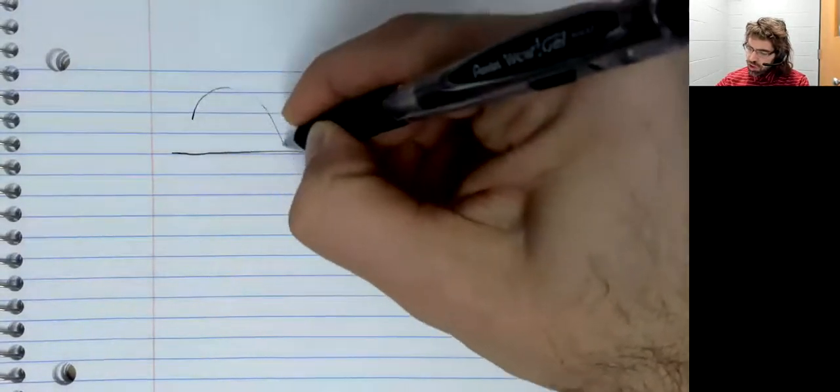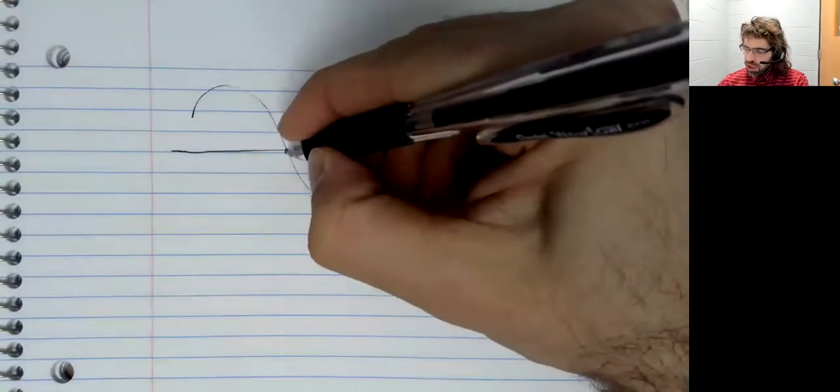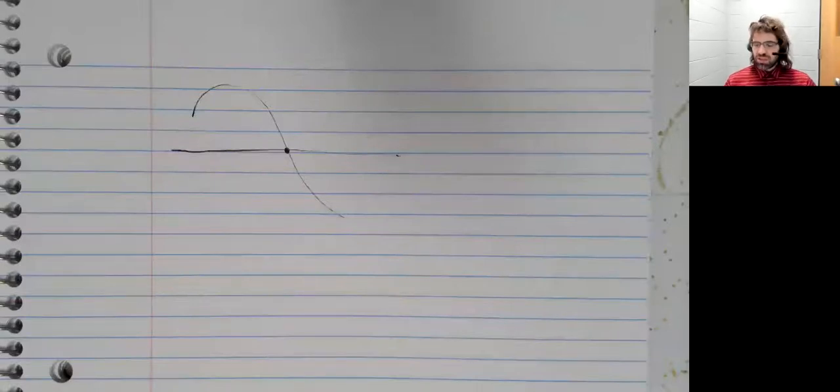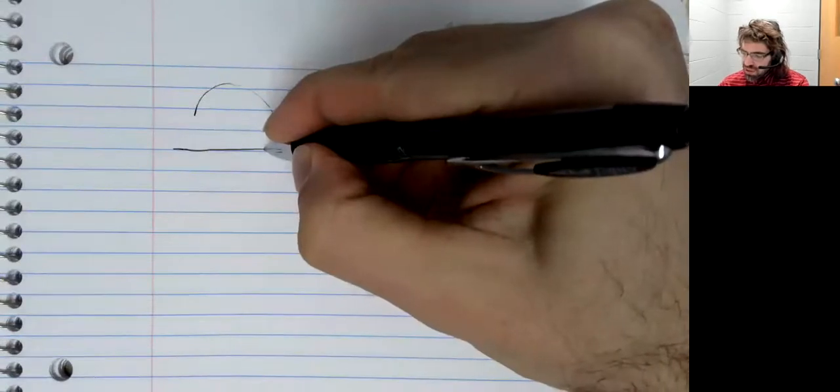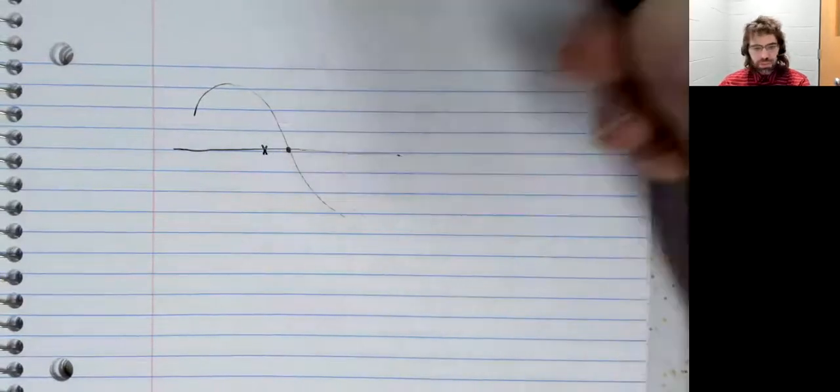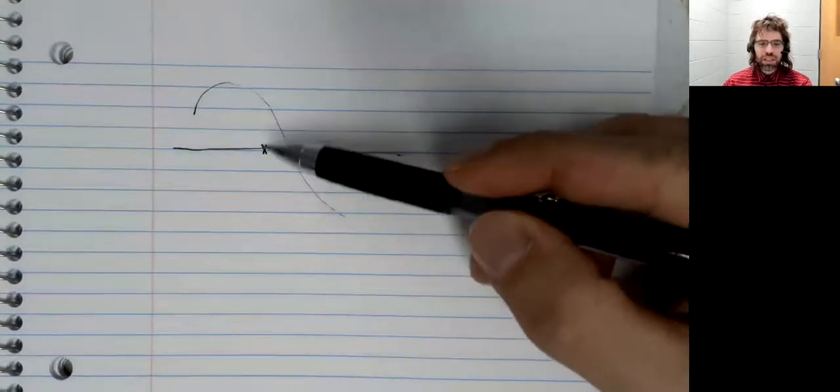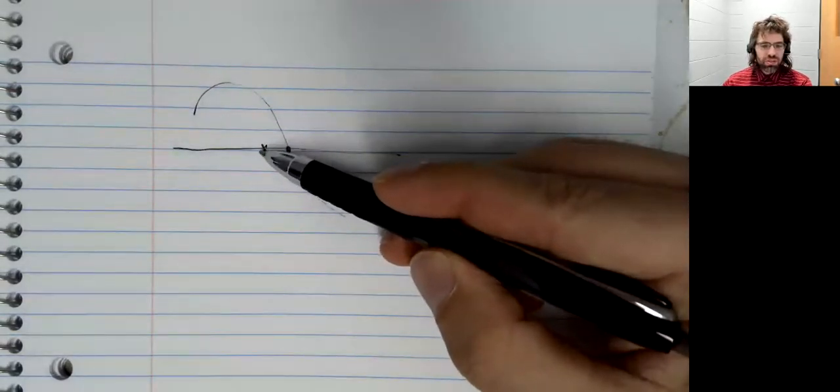Suppose that we have a function and we want to find a root of that function. We start Newton's method with a guess. The root looks like it's somewhere around here. So let's say we use this as our guess.